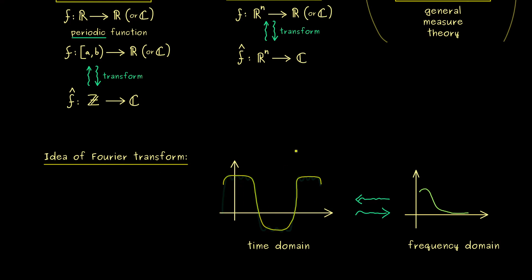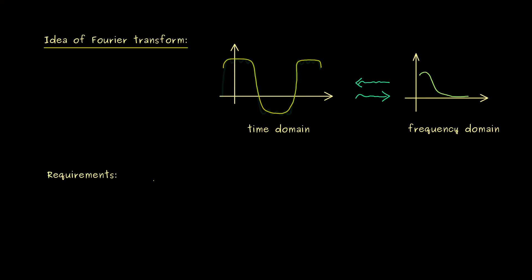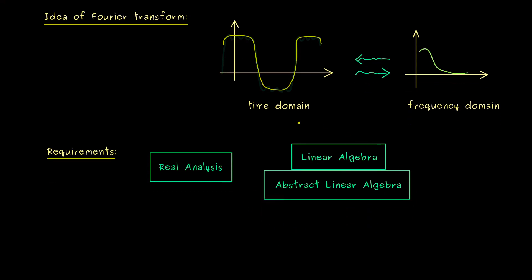However, before you continue watching this series here, you should know about the essential requirements you need for understanding. And since we deal with functions here, you might already know that you need some knowledge of real analysis. So this is the first box here. And we will definitely need integration and derivatives from this course. And on the other hand, as I've already mentioned, we have linear combinations of cosine and sine functions. So we need linear algebra. In fact, it might be very helpful if you know some stuff of my abstract linear algebra course. Because there we talk about function spaces. So therefore after watching these two or three video courses, you can definitely start with this one here.